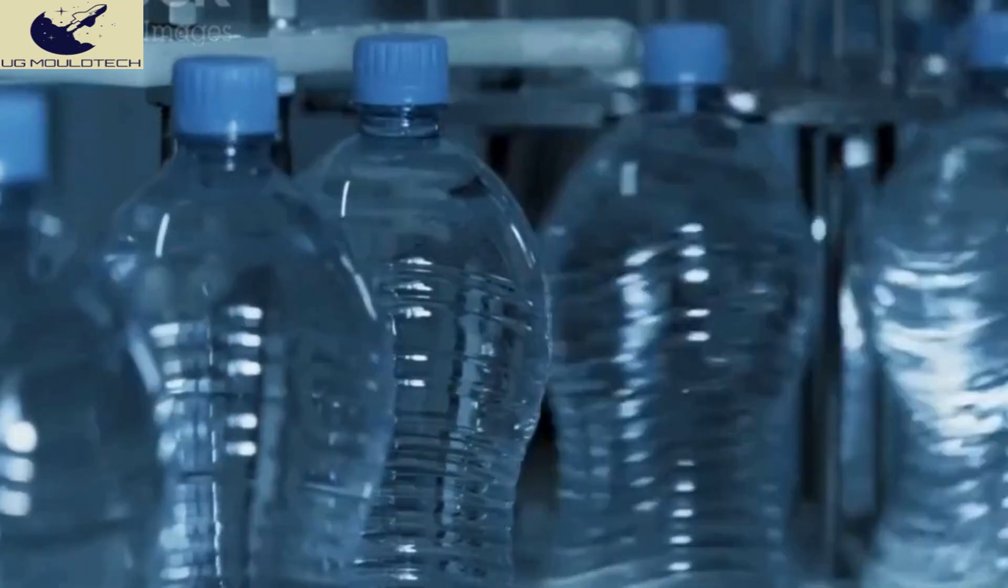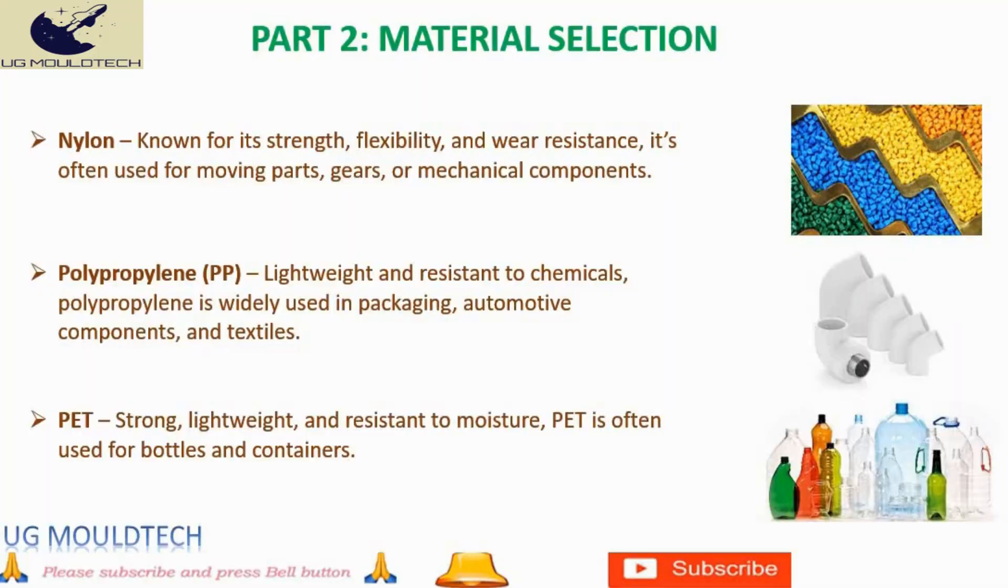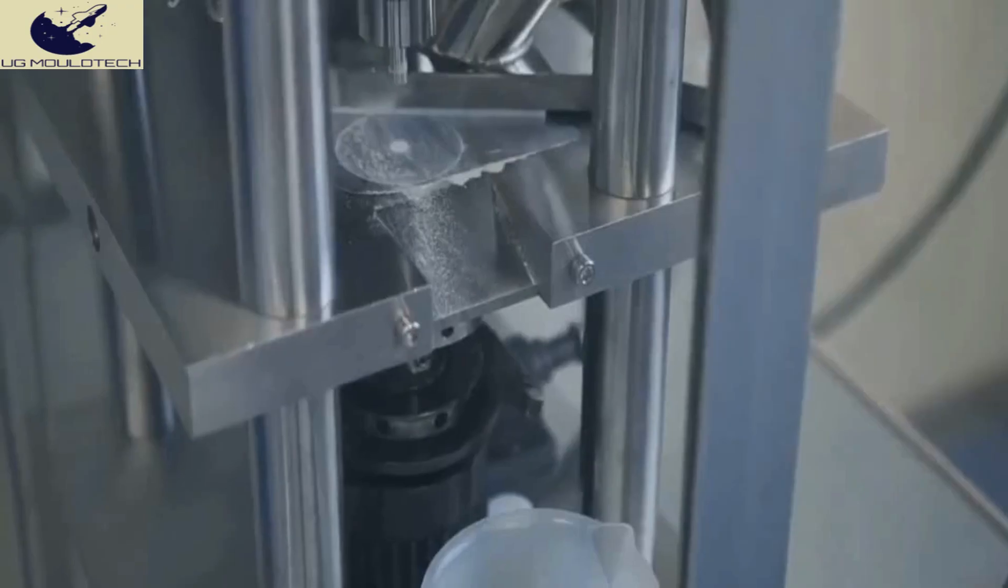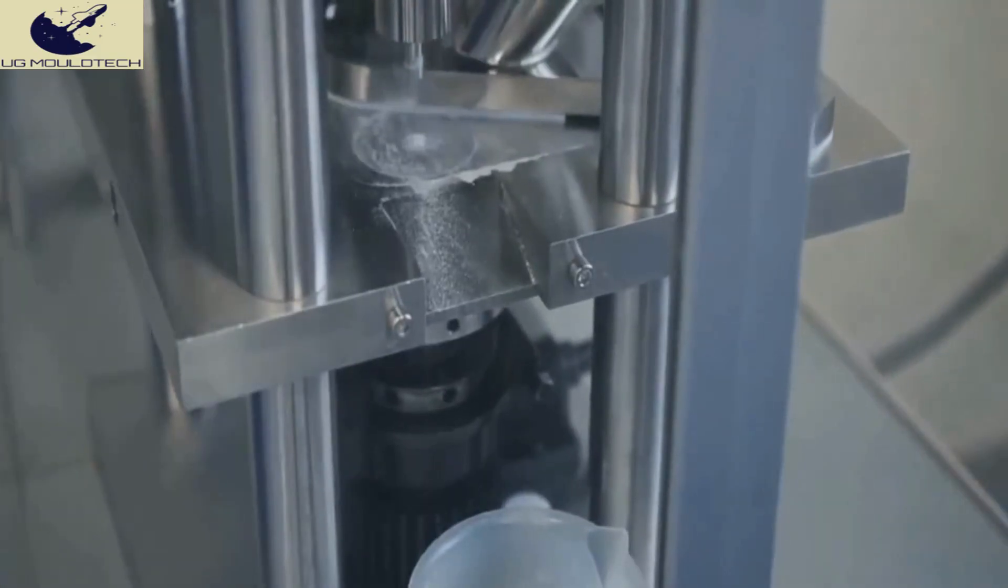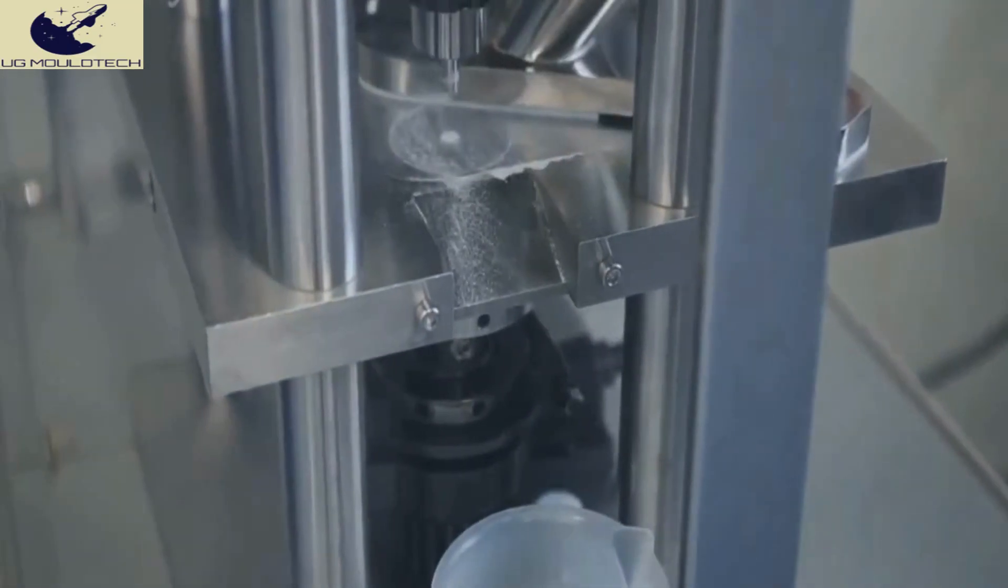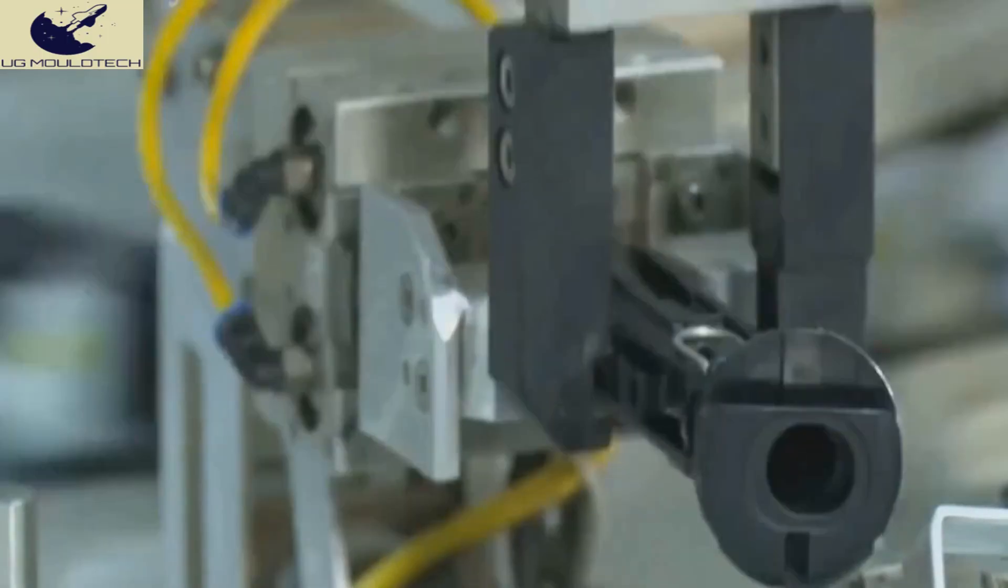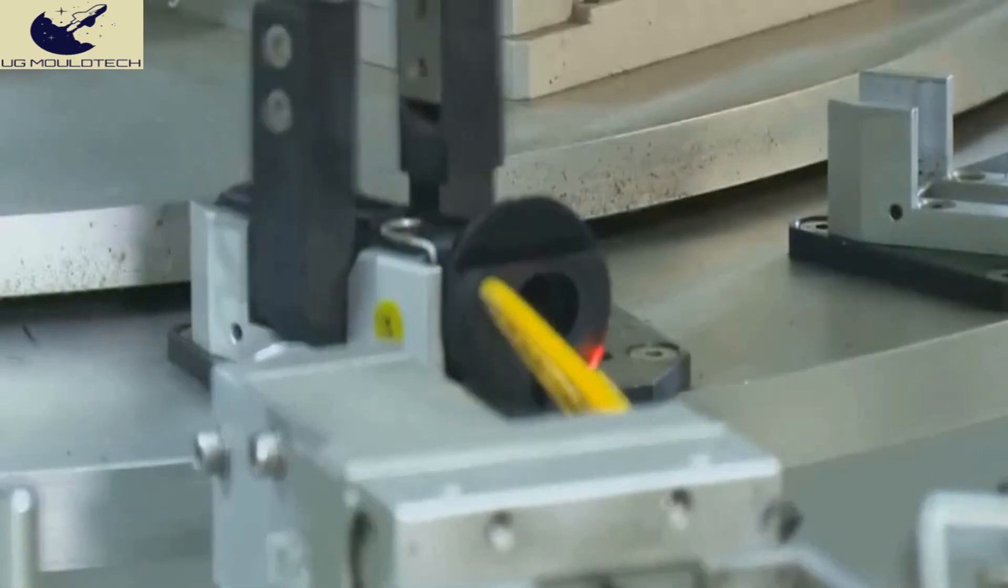PET: A versatile material known for its strength, lightweight nature, and excellent moisture resistance, is predominantly used in the production of bottles and containers. When selecting a material, consider the specific properties required for your application, such as strength, flexibility, heat resistance, or chemical resistance. Additionally, factor in cost and availability, which are crucial for efficient mass production.